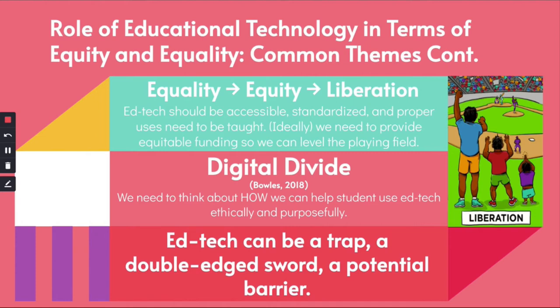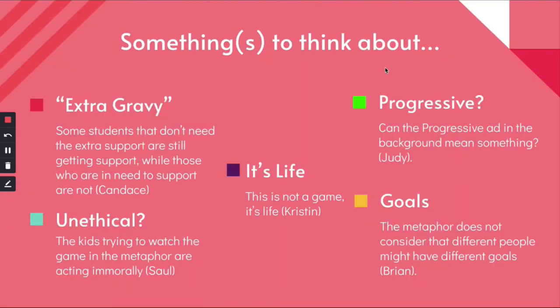The final theme is that educational technology can be a trap, a double-edged sword, and a potential barrier if we do not provide students with support. And that wraps up my synthesis for critical reflection number four.